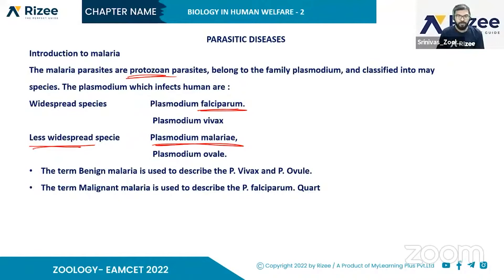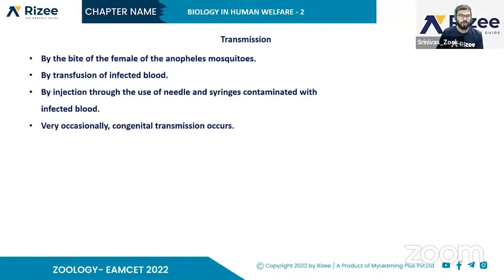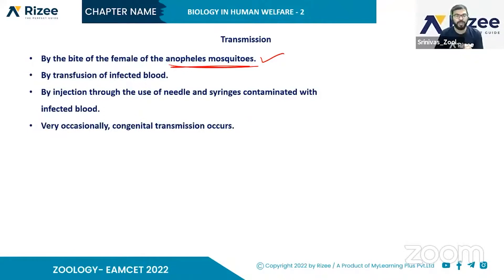Malignant malaria describes Plasmodium falciparum. Transmission occurs by the bite of the female Anopheles mosquito. It can also occur by injection through the use of needles and syringes contaminated with infected blood.